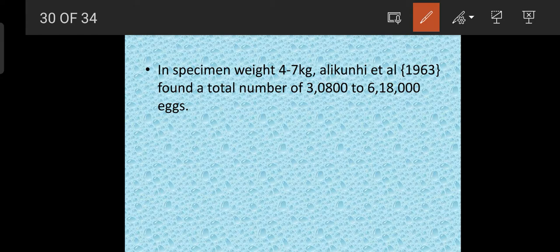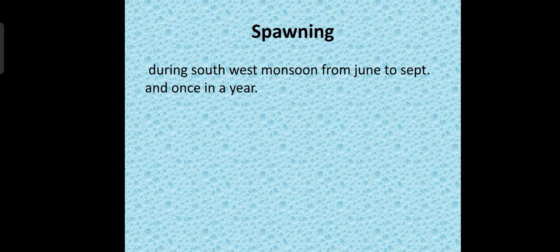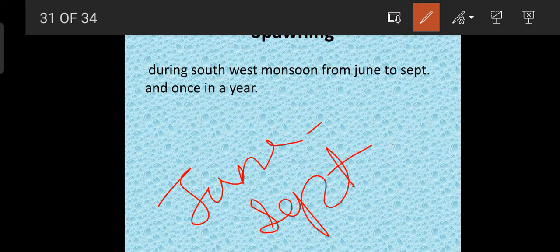Regarding fecundity: in specimens weighing 4 to 7 kg, the fecundity ranges from 3,80,000 to 6,18,000 eggs, which can be taken from the ovaries. The spawning season is June to September, and this fish spawns once in a year.